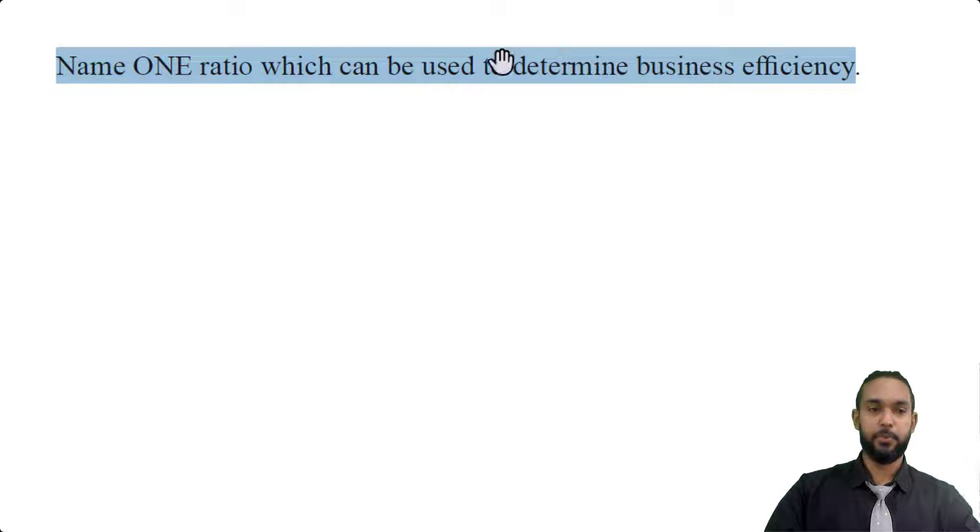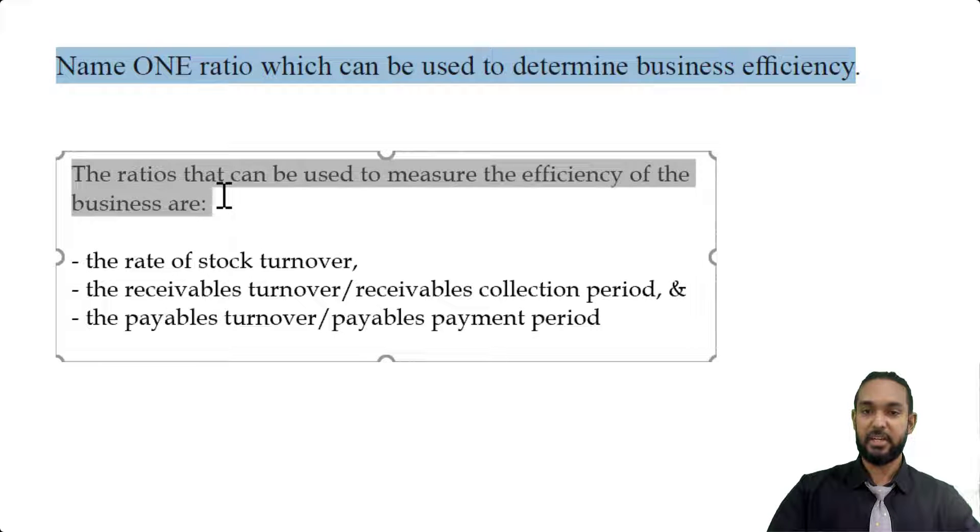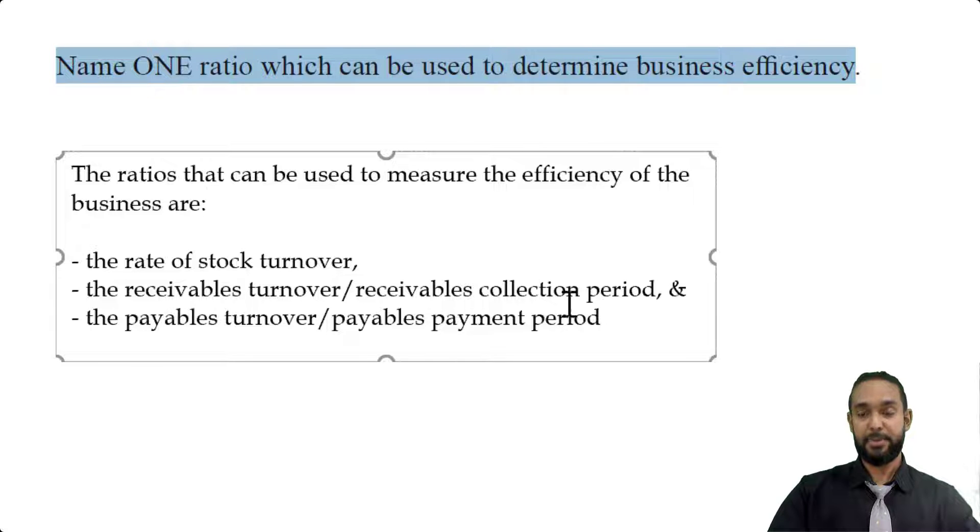For part A, with one mark, name one ratio which can be used to determine the business efficiency. So you know me, I don't like to just give you one answer. I want to give you as many as I can. So the ratios that can be used to measure the efficiency of the business are the rate of stock turnover, the receivables turnover or receivables collection period, and the payables turnover or payables payment period. Now there may be others, but at the CSEC level, as far as I'm concerned, these are the three you have to know.